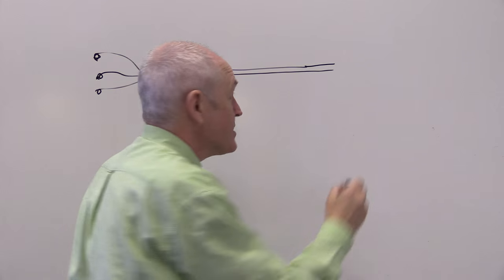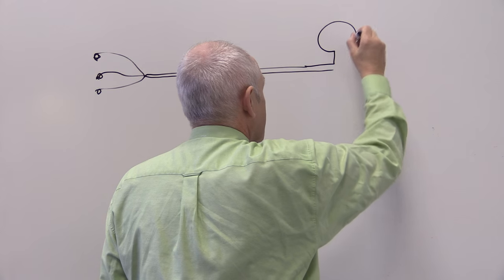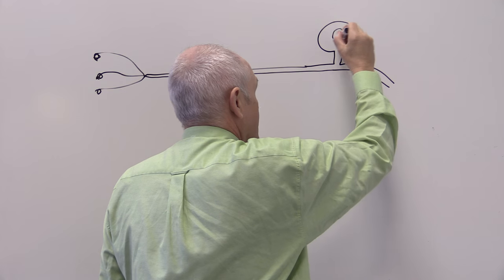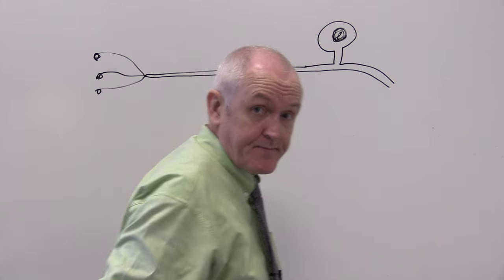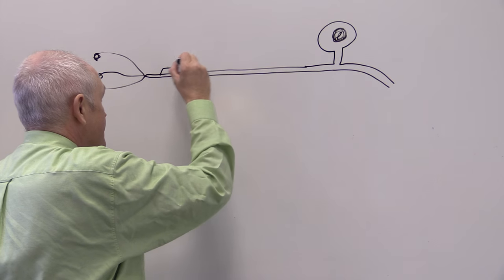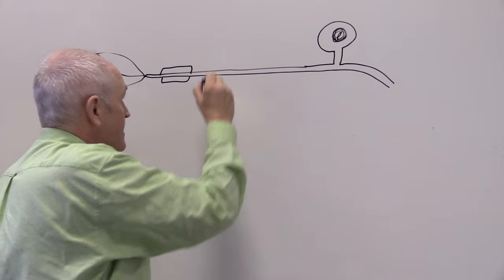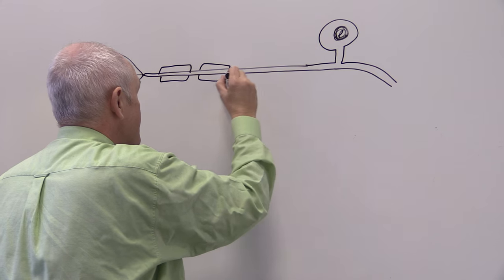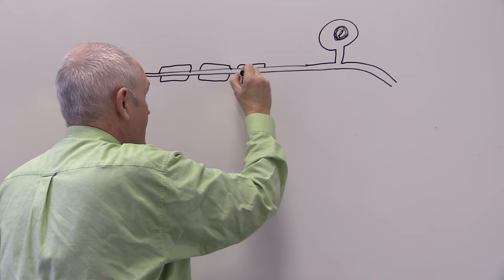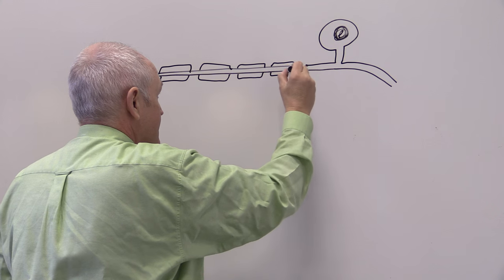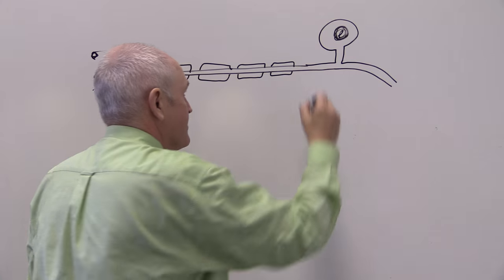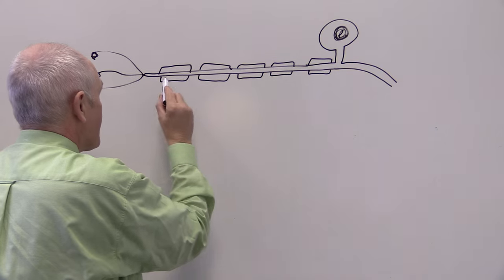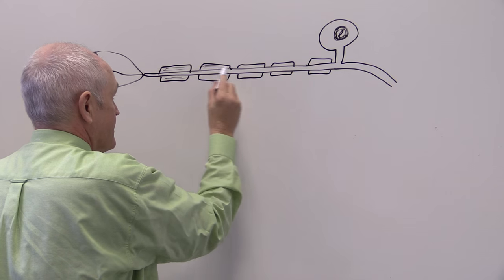As it approaches the spinal cord, there's going to be a little side branch with the nerve cell body, and this is going to be myelinated. Remember, the Schwann cells that comprise the myelin sheath nourish, protect, insulate, and facilitate the process of saltatory transmission.